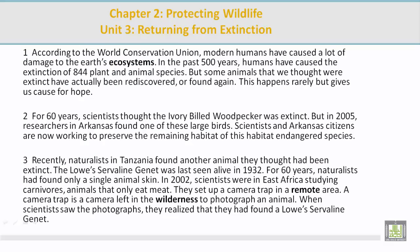Paragraph 1. According to the World Conservation Union, modern humans have caused a lot of damage to the Earth's ecosystems. In the past 500 years, humans have caused the extinction of 844 plant and animal species. But some animals that we thought were extinct have actually been rediscovered or found again. This happens rarely, but gives us cause for hope.